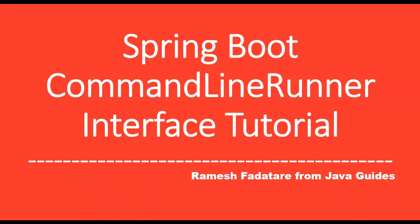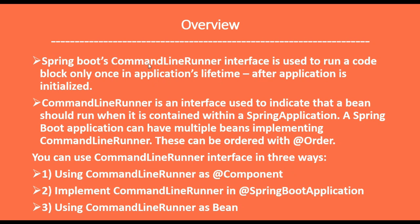Hey guys, welcome back. This is Ramish from Java Leads. In this video we are going to implement the Spring Boot CommandLineRunner interface tutorial. The CommandLineRunner interface is used to run a code block only once in an application's lifetime, or after the application is initialized. It is an interface used to indicate that a bean should run when it is contained within a Spring application. A Spring Boot application can have multiple beans implementing CommandLineRunner, and these can be ordered using the @Order annotation.